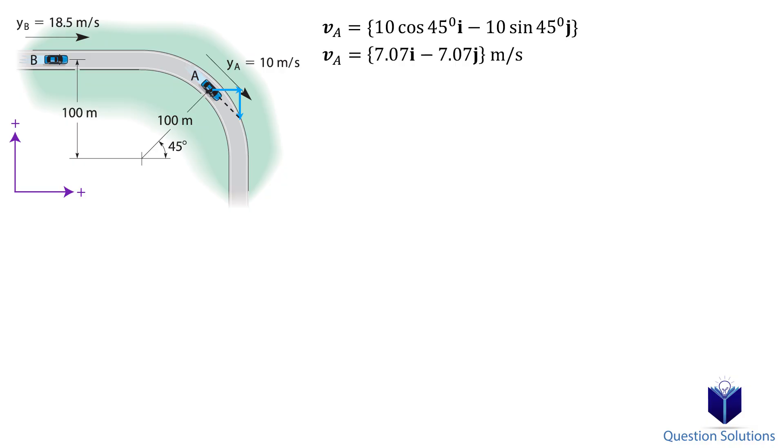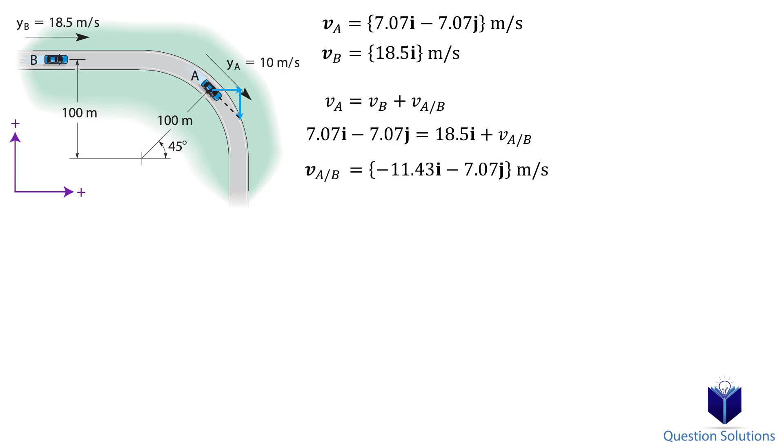For car B we only have the x component so it's just 18.5i. We can now use the relative velocity equation. Remember that the question is asking for the relative velocity of car A with respect to car B.